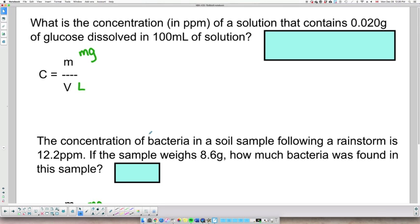Okay, so let's take a look at the first math example. Let's solve it together. So it says, what is the concentration in ppm of a solution that contains 0.02 grams of glucose dissolved in 100 mL of solution.